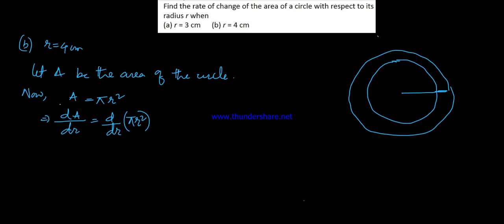So here we go, we have dA by dR. Find the rate of change of area of the circle with respect to its radius. So here we go, dA by dR.